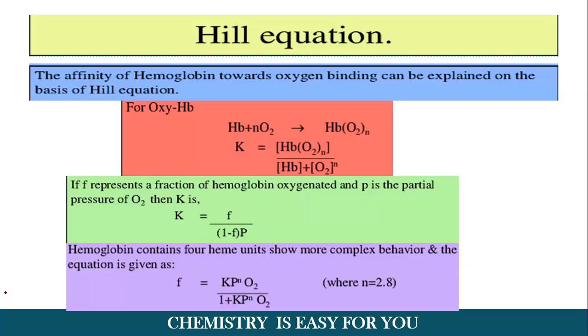So the affinity of hemoglobin towards oxygen binding can be explained on the basis of Hill equation. So oxyhemoglobin or we can say that the hemoglobin to which oxygen is already bound, we can write this equation as that is the K, the constant as hemoglobin HbO2 divided by the concentration of oxygen and concentration of sum of concentration of oxygen as well as hemoglobin. And now if F represents the fraction of hemoglobin oxygenated and P is the partial pressure of oxygen, then K can be represented as K equal to F by 1 minus F into P.